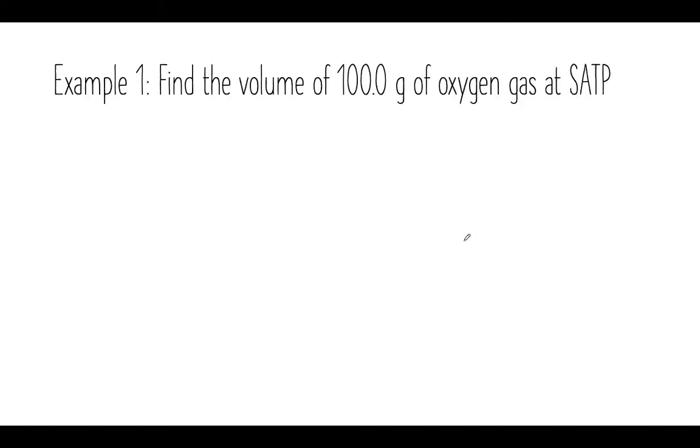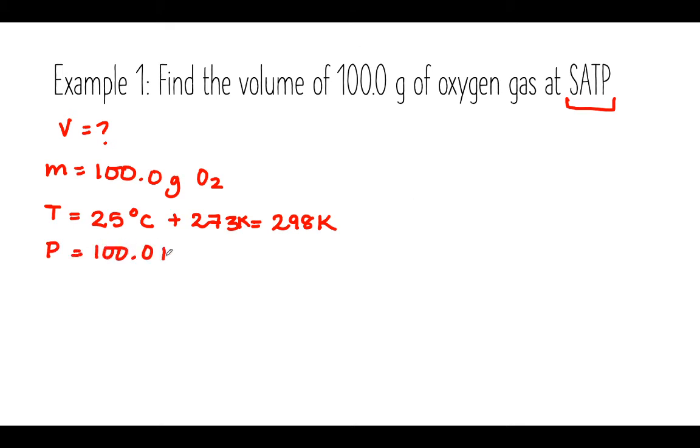Let's take a look at an example on how to solve an equation using the ideal gas law. In this question, they're asking us to find the volume, so V equals question mark. They're giving us the mass: 100.0 grams of oxygen gas at standard ambient temperature and pressure. They're not telling me exactly what standard ambient temperature and pressure are, but I know that standard ambient temperature gives me 25 degrees Celsius. I'm going to convert that to Kelvin right away: 25 plus 273 equals 298 Kelvin. And pressure is 100.0 kilopascals.